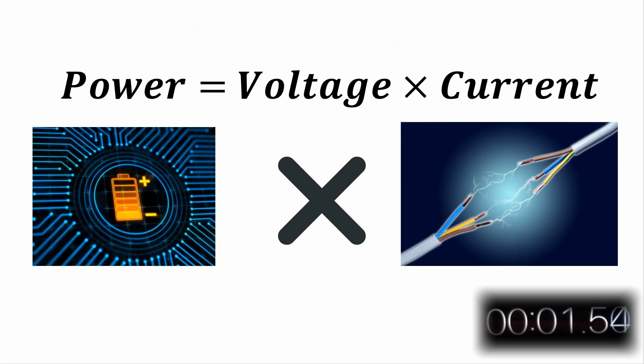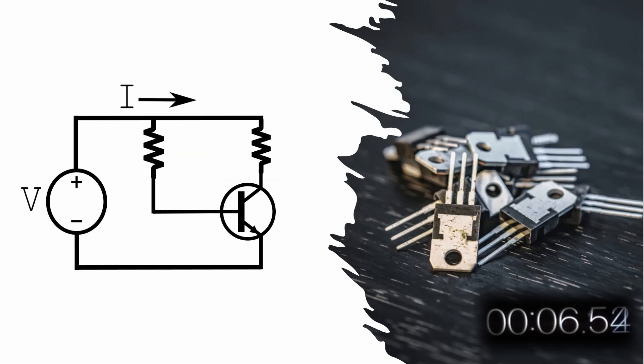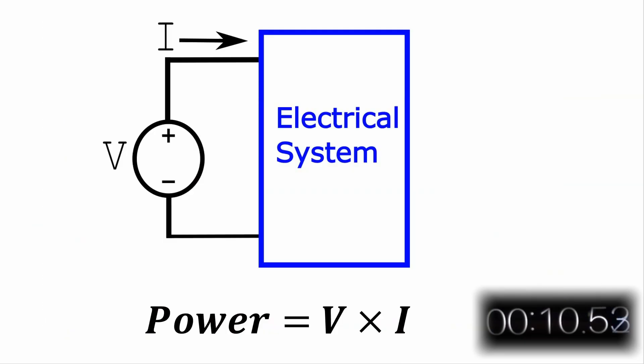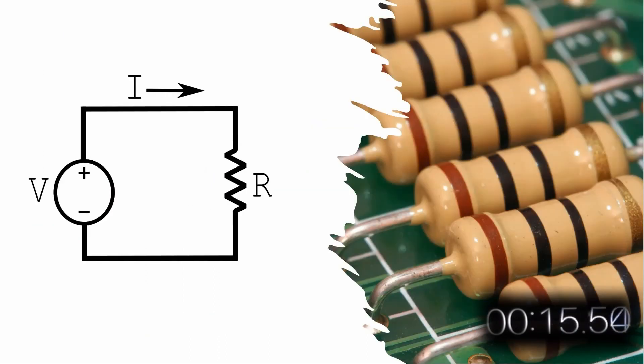In electrical circuits, power is always equal to voltage times current. This is true whether you're looking at a non-linear element like a transistor, or a diode, or even a vacuum tube. It's true if you're considering an entire electrical system, or just a resistive element.